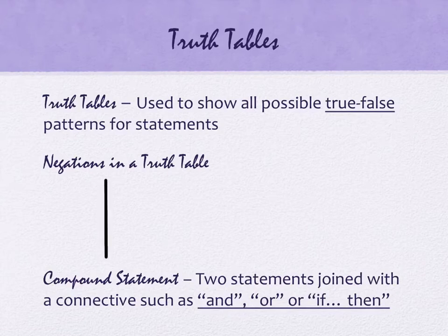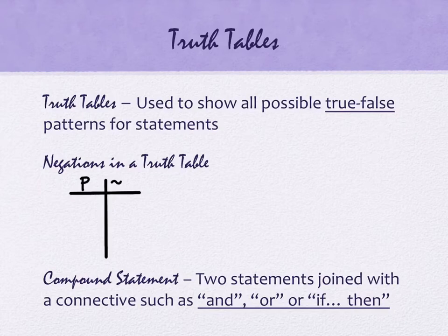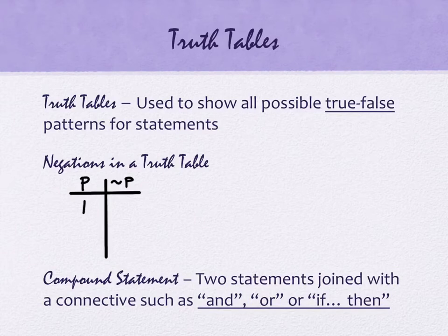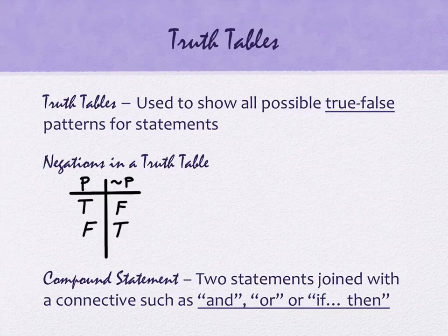To create a truth table, draw a vertical and horizontal line. Our statement is P — maybe it's 'all dogs go to heaven' or 'I ate eggs for breakfast.' The negation is tilde P. If I ate eggs for breakfast, the negation is 'I did not eat eggs for breakfast.' If the first statement is true, what do you think the negation is? False. And if the first statement is false, the negation is true. Not all statements are easy to negate — some just need 'not' inserted, but others with quantifiers are trickier.